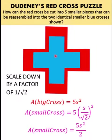Clearly, 5S squared over 2 is one half of 5S squared. So the area of the small cross is just half the area of the big cross. We are now sure that this blue cross has an area that is half the red cross. But the problem now is how are we going to cut this red cross into 5 smaller pieces that can be reassembled to create 2 identical smaller blue crosses.